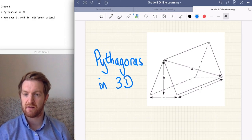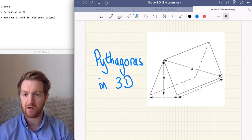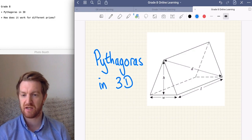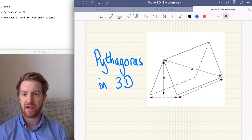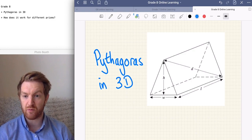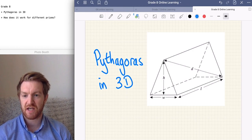Look at some Pythagoras in 3D. We're going to focus mainly on cuboids. We're also going to look at a triangular prism like this one here. I'm going to show you how you can apply the rules that we've already looked at to these kinds of shapes.